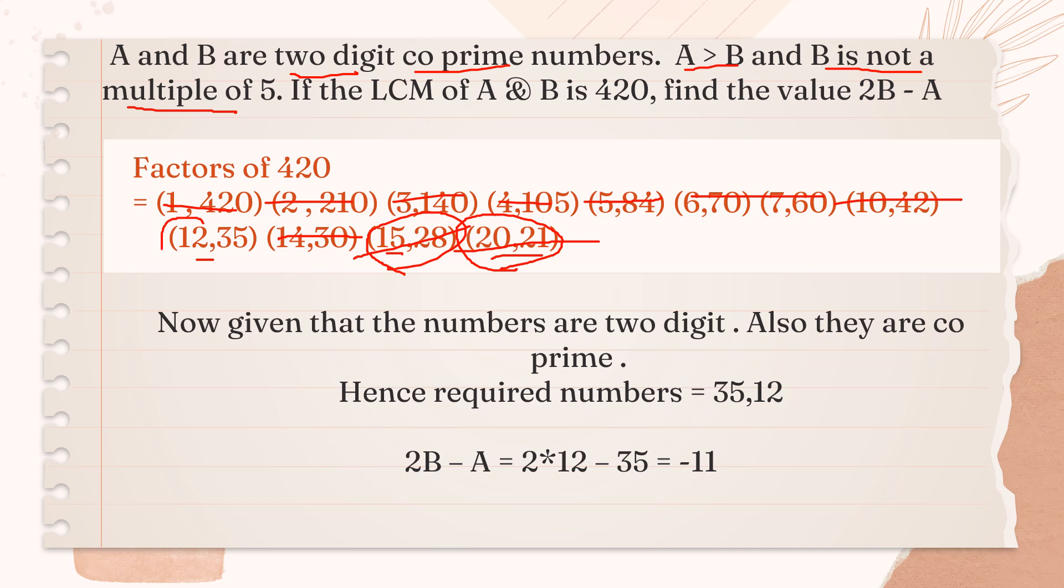We are left with 12 and 35. This set of 12 and 35 is solving all the conditions. They are two-digit. They are co-prime. A is greater than B. And the smaller one is not a multiple of 5. Here, you can see 35, the greater number, is a multiple of 5. The smaller one, 12, is not a multiple of 5. So, our answer is A and B, the set is 12 and 35.